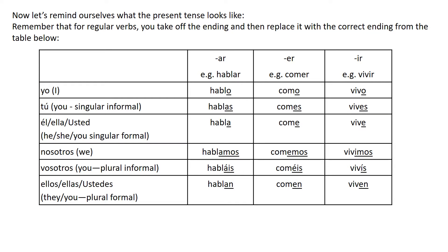What we have to do each time we want to use them is we take off our ending — so we take off that AR, ER or IR — and we add the endings that I've underlined in the verbs underneath. So we've got hablar, to speak; comer, to eat; and vivir, to live.